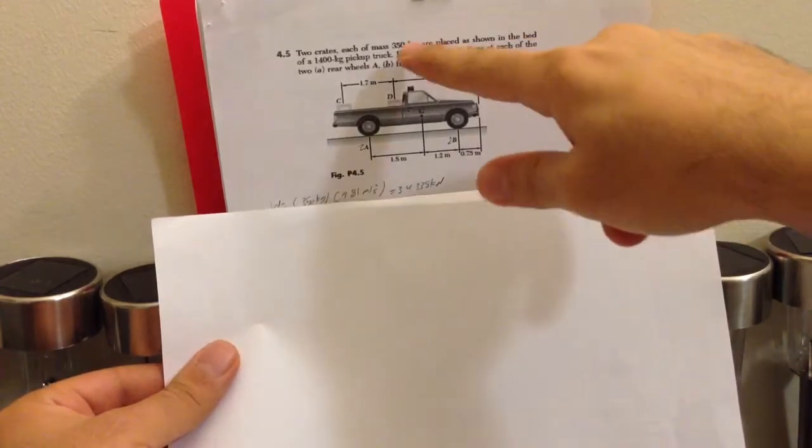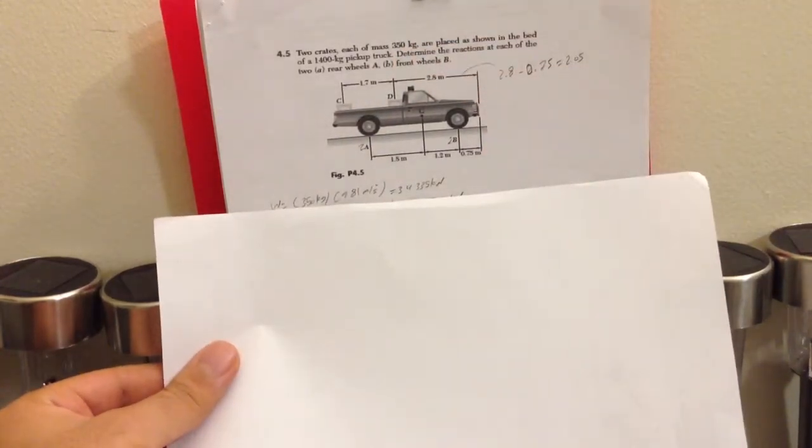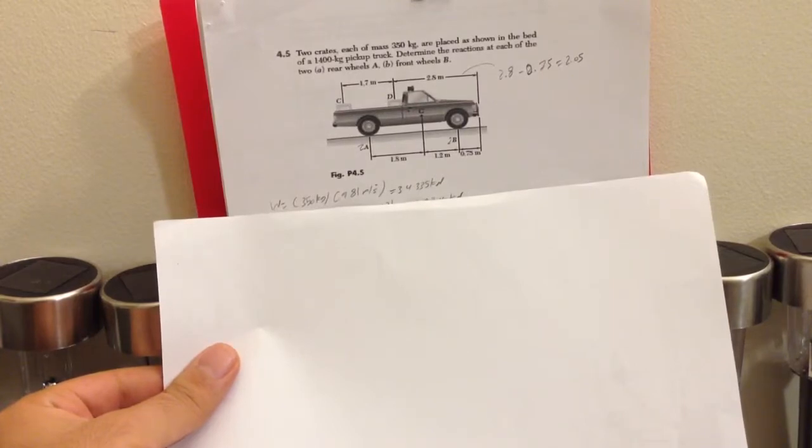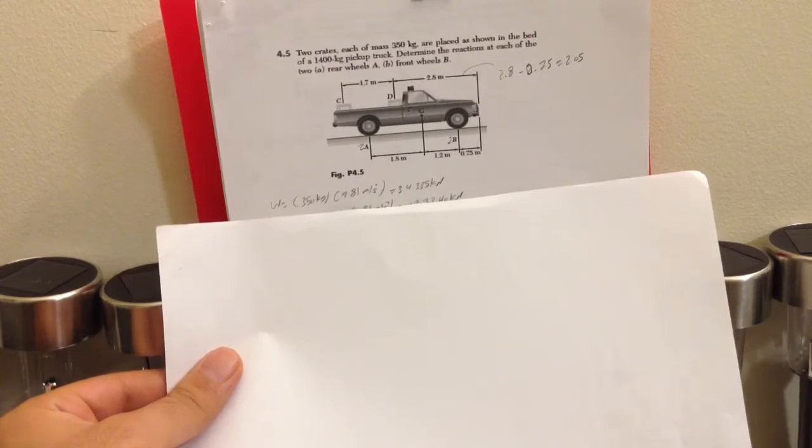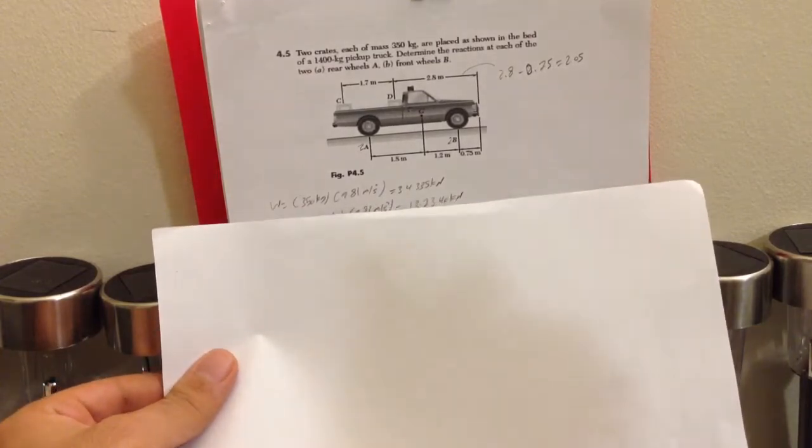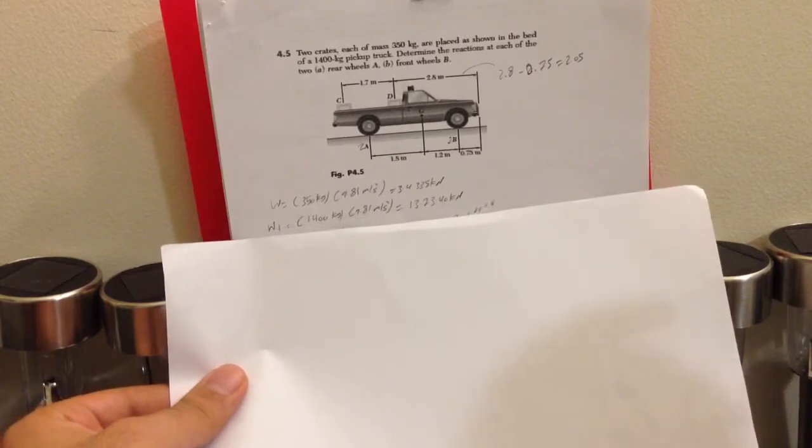First we have to find the weight in kN. The weight of the first mass is 350 kg times 9.81 meters per second squared to get our answer in kN. Then we apply the same rule for the second mass which is 1400 kg.